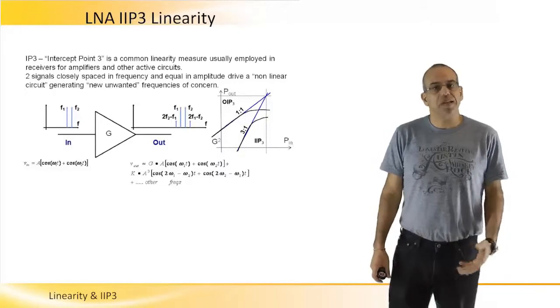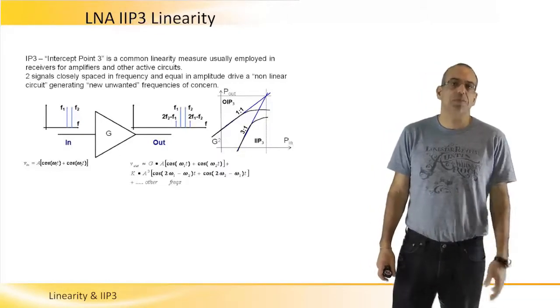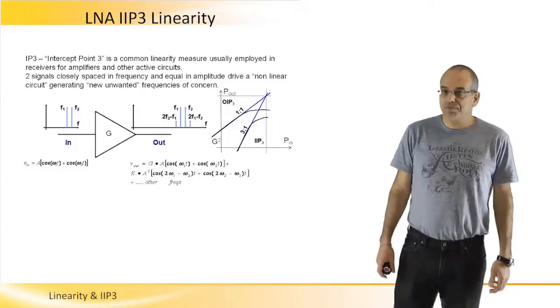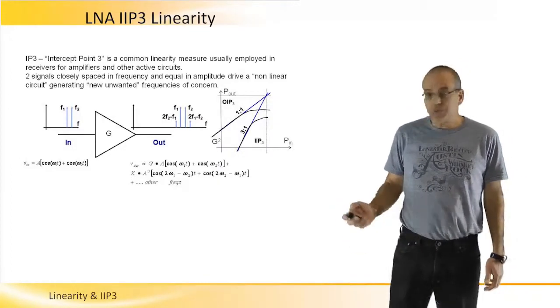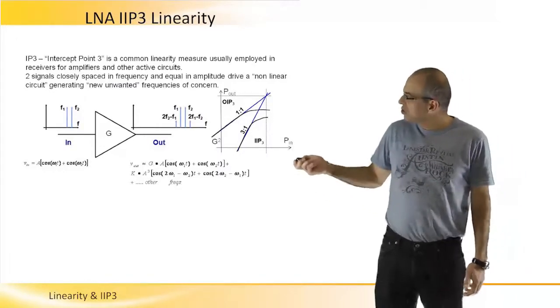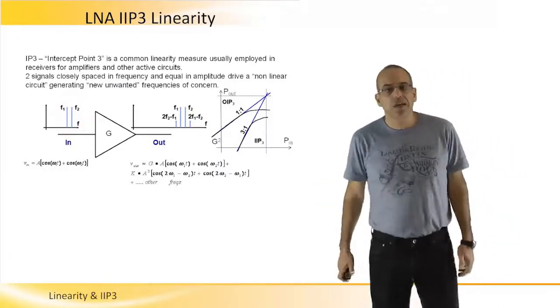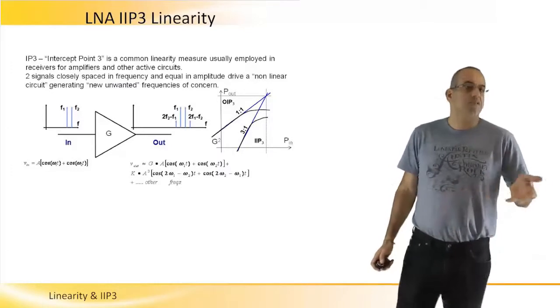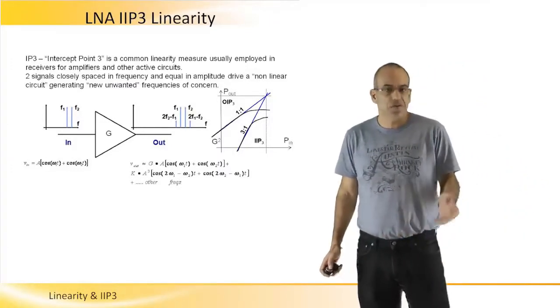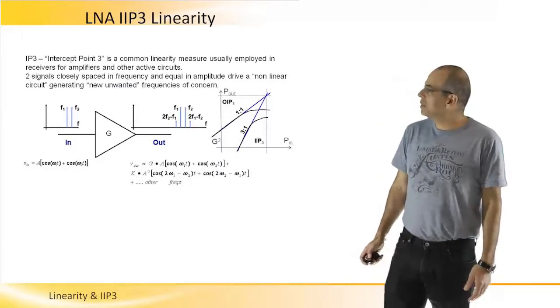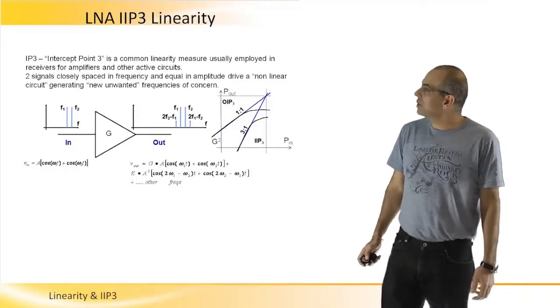The parameter that we usually use to define LNA linearity is intercept point 3, which I'm going to explain now. And the IIP3 stands for input intercept point 3. So for IIP3, what we do, we introduce two input signals into the LNA. It could be another device, it doesn't need to be just an LNA, but any other circuit can be characterized by IIP3.